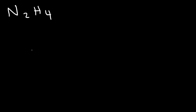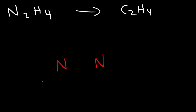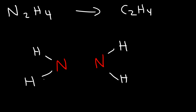What about hydrazine? This is going to be very similar to C₂H₄. Put the two nitrogen atoms in the middle and place two hydrogen atoms on each nitrogen atom. Nitrogen likes to form three bonds, and right now each has two, so we need a single bond between the two nitrogen atoms. Nitrogen also likes to have one lone pair. So that's the structure of hydrazine.